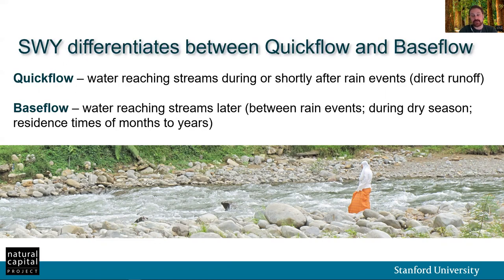Before I get too deep into model theory, I'd like to define some terms. It's important to understand that SWY differentiates between quick flow and base flow. Quick flow refers to direct runoff — that is, water reaching streams or rivers during or shortly after rain events. Base flow is water that reaches streams or rivers later, as in between rain events or during the dry season, and can have residence times of months or even years.